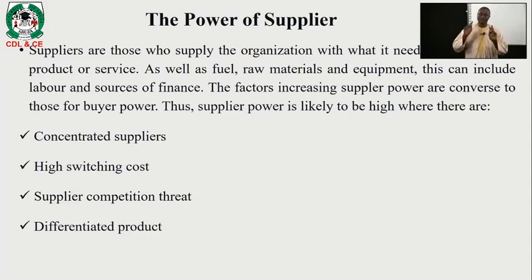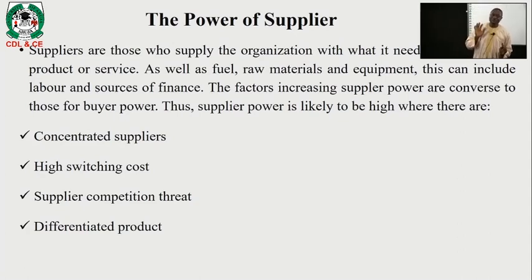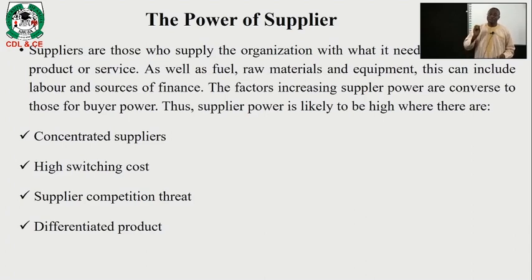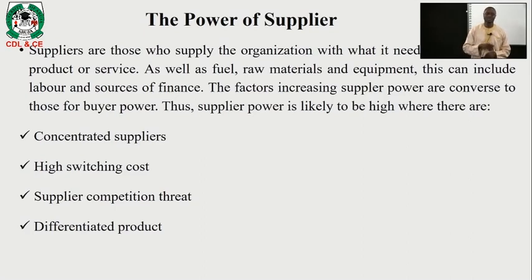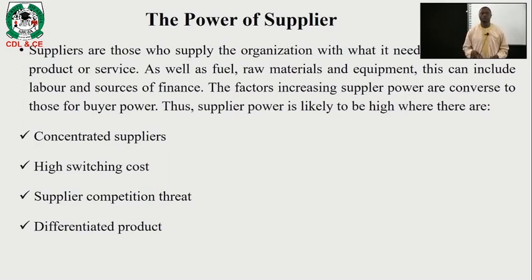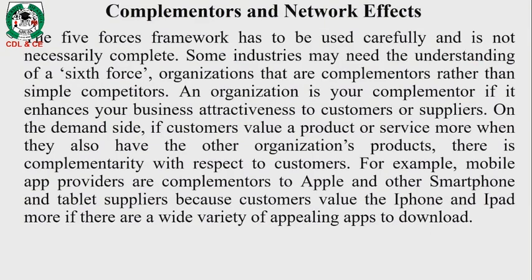Suppliers are those who supply the organization with what it needs to produce its product or service, including fuel, raw materials, equipment, labor, and sources of funds. The factors increasing supplier power are the converse of those for buyer power. Supplier power is likely to be high where there are concentrated suppliers, high switching costs, supplier competition threat, and differentiated products.